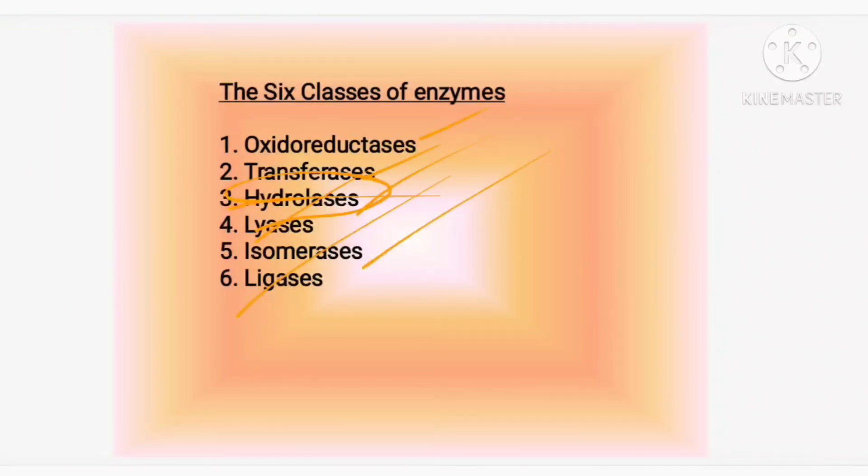To summarize the six enzyme classes: oxidoreductase helps in oxidation and reduction; transferases help in transferring functional groups; hydrolases help in hydrolysis; lyases help in breaking bonds other than hydrolysis; isomerases help in isomerization reactions; and ligases help in joining chemical substances. With this we come to the end of the chapter on biomolecules.